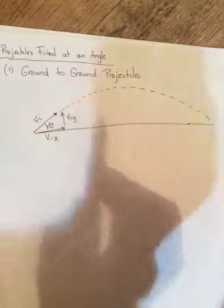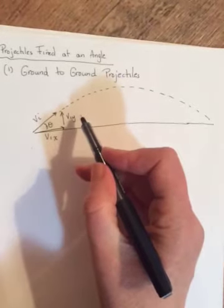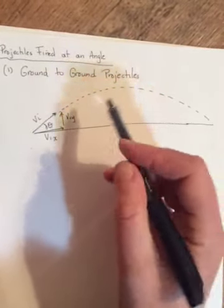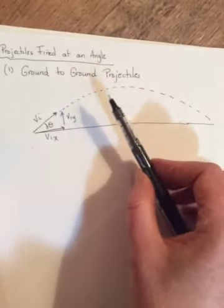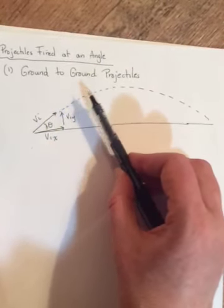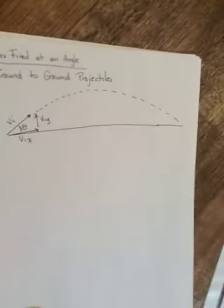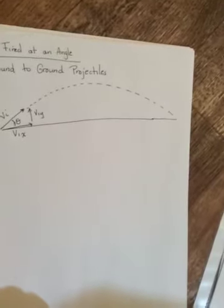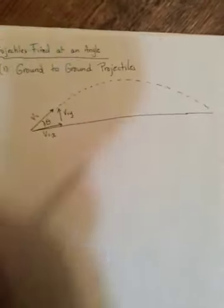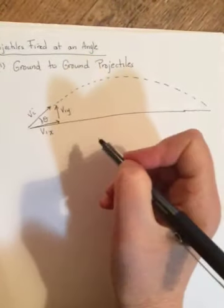But in the Y direction, it is going to change velocity because of gravity. So there is an AY and it's still going to be due to gravity. Only this time we have to be careful about direction because in the beginning, VIY is going up and gravity, of course, is acting down. So gravity is going to have to go in as a negative. So gravity has to go in as a negative.